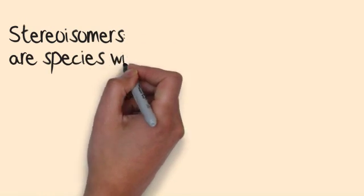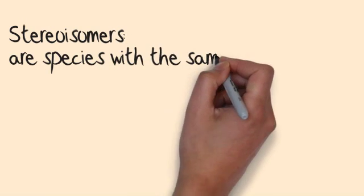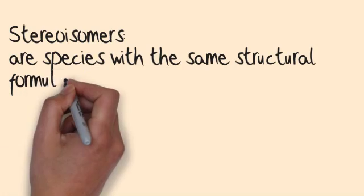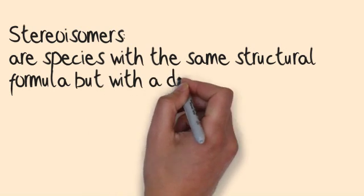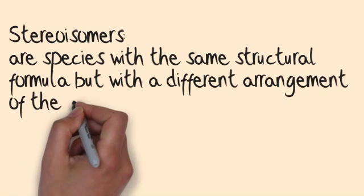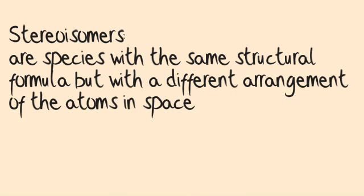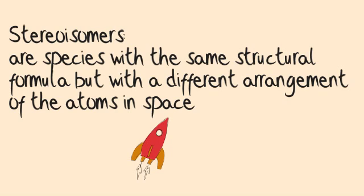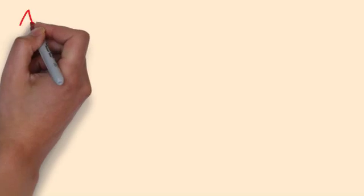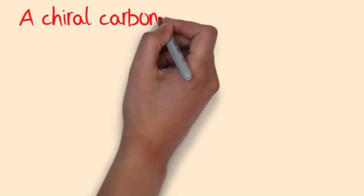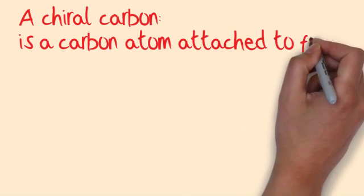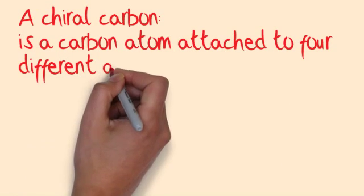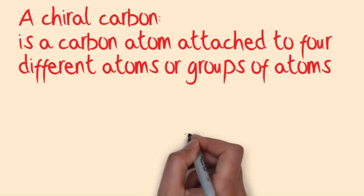Stereoisomers are species with the same structural formula but with a different arrangement of atoms in space. A chiral carbon is a carbon atom attached to four different atoms or groups of atoms.